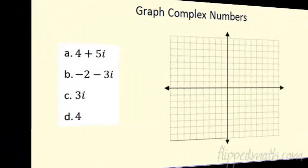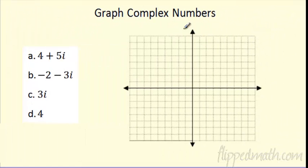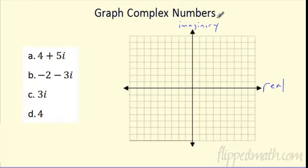What can you do with complex numbers? We can graph them on the complex plane. The x-axis is the real axis and the y-axis is the imaginary axis. To plot point A — for a plus bi — you go 4 in the real direction and up 1, 2, 3, 4, 5 in the imaginary direction. There it is — that's 4 plus 5i. That is point A.